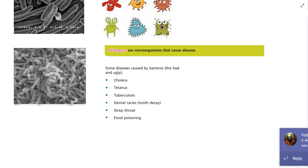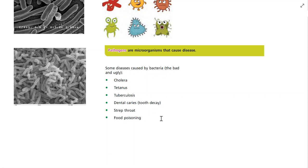Strep throat is another form of bacterial infection in the mouth. Food poisoning is also really important — if you're running a restaurant it's very important to maintain strict hygiene standards, because bacteria such as E. coli can get into food and cause severe symptoms. These are some of the bad bacteria and the diseases caused by bacteria.